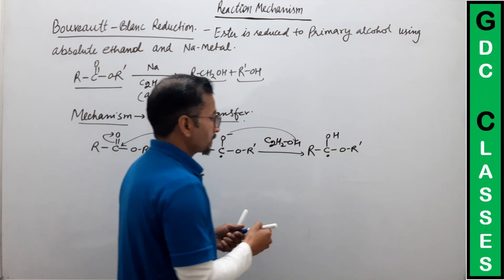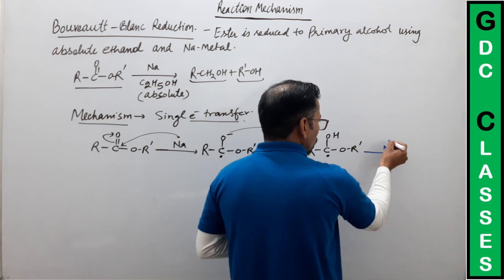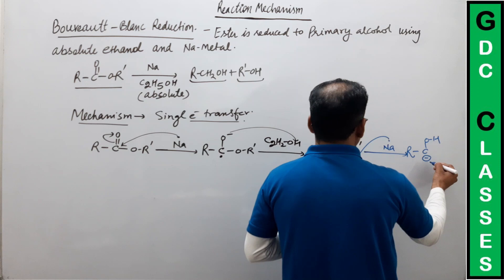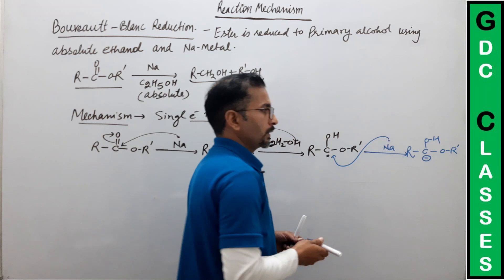Next step में फिर से sodium आएगा और sodium अपना एक electron इस carbon को देगा। Next product हमारे पास: R-C-O-H, और इस carbon पर negative charge आ गया है — double bond O-R'. Clear?